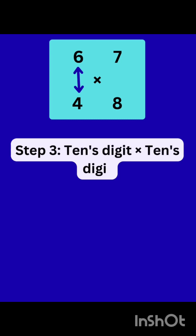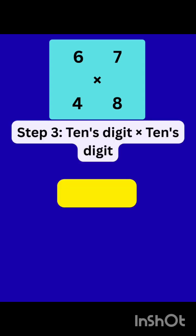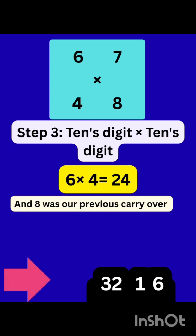Now in step 3, multiply 10's digit by 10's digit. That is 6 multiplied with 4. That will be equal to 24.